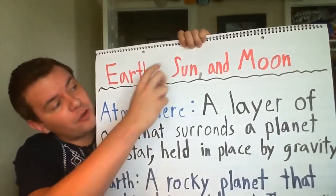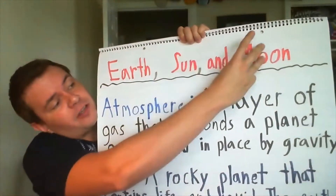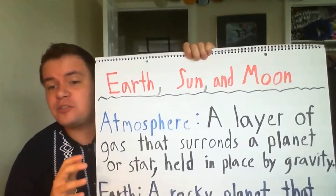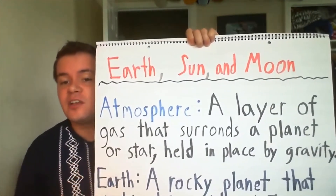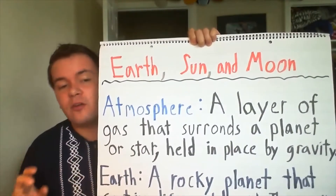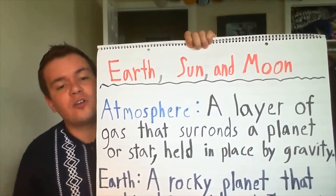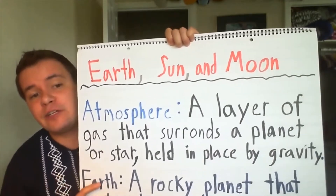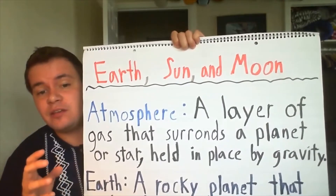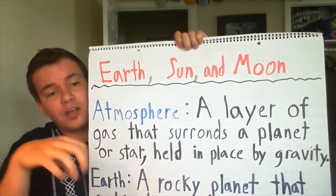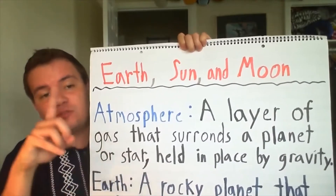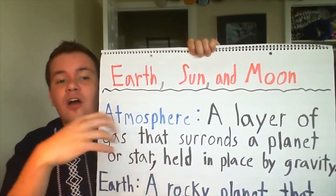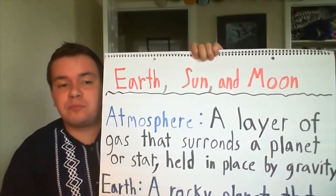Before we go in depth about the earth, the sun, and the moon, I want us to discuss atmospheres. Atmospheres are layers of gas that surround a planet or star, and these layers of gas are actually held in place by gravity. So the same thing that holds us in place and stops us from floating into space also holds our atmosphere in place.